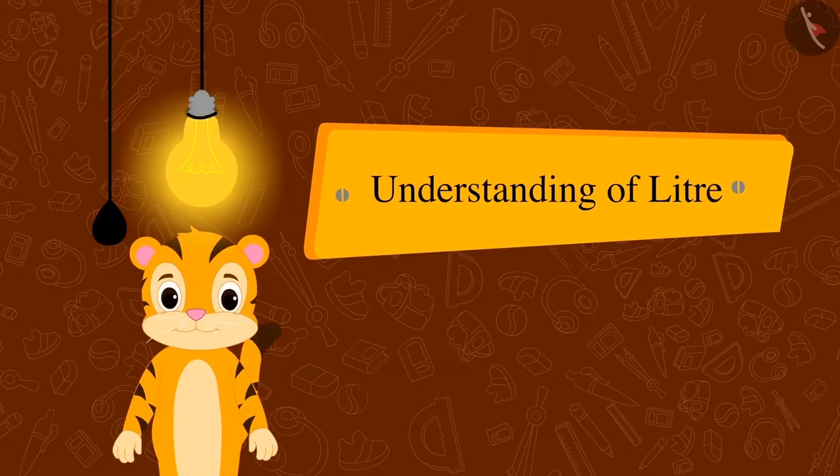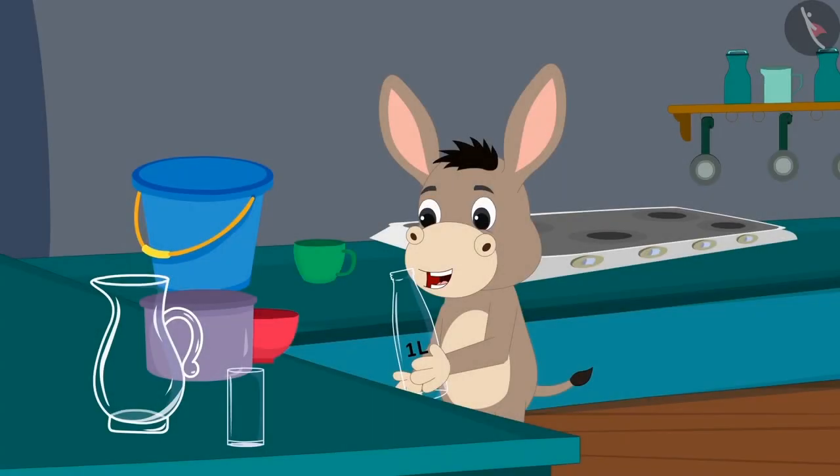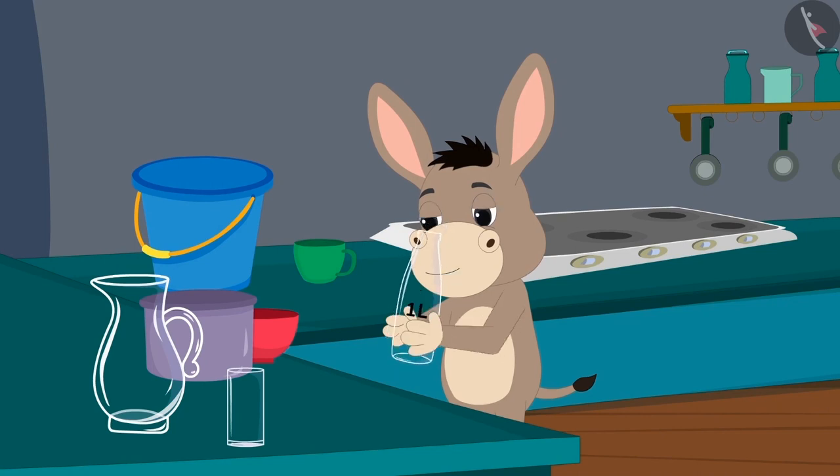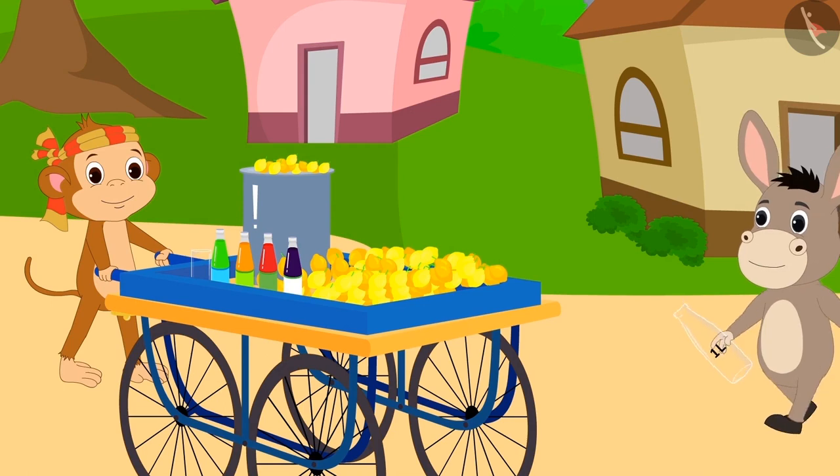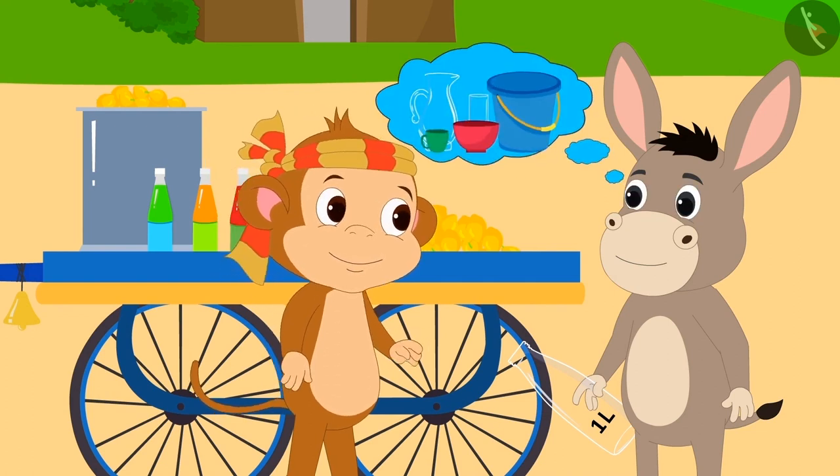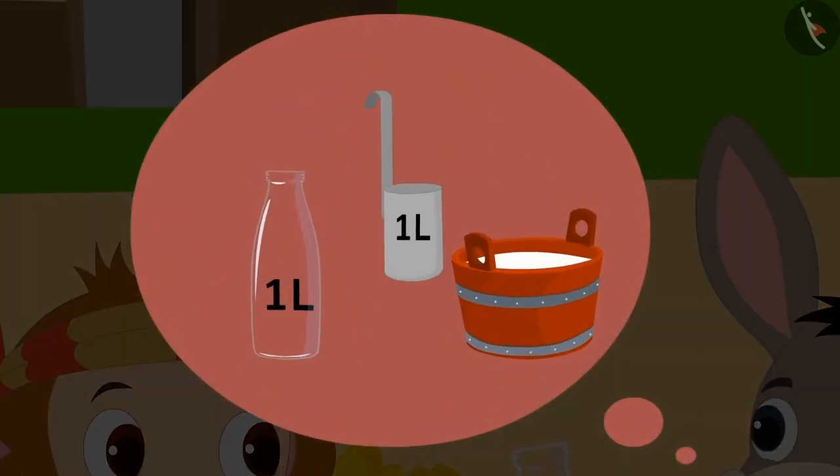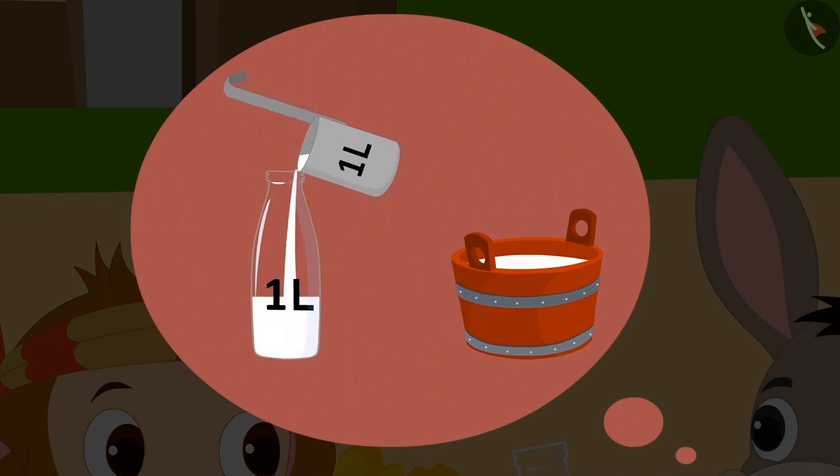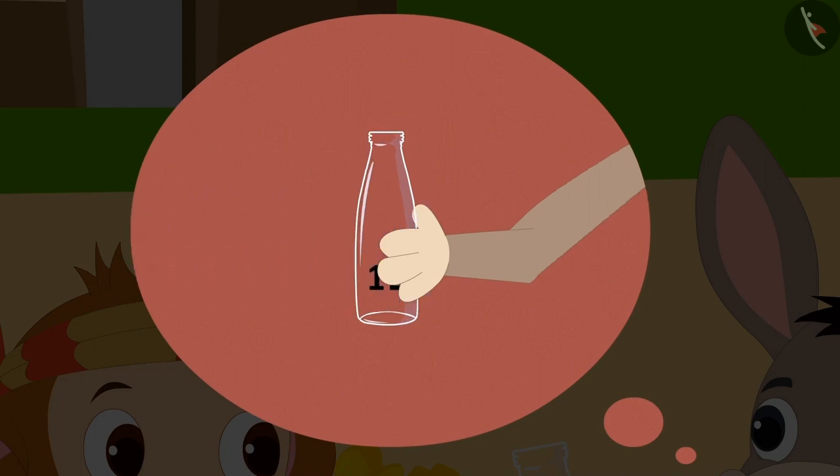we will see some misconceptions related to this. Bholla is so excited about his one litre bottle that he has come to Babban's stall today to share his experience. Bholla told Babban everything about measuring the capacity of utensils in litres and also mentioned how Golu gave him that one litre bottle.